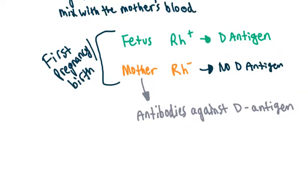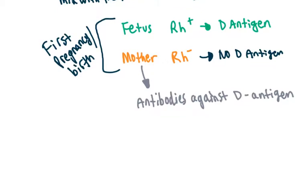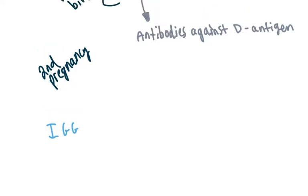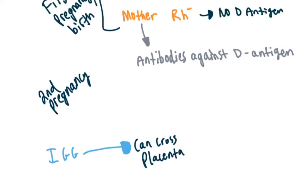Now let's say the mother gets pregnant again with a second fetus. Something important to note is that IgG antibodies — immunoglobulin G antibodies — which are produced by your B lymphocytes, your plasma cells, your effector cells, and your memory B cells, can cross the placenta from the mother to the fetus. This can help the fetus with his or her immunity.